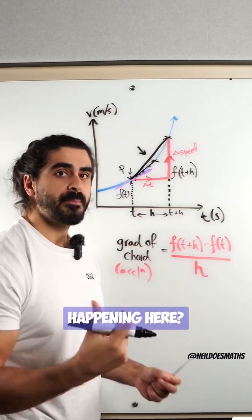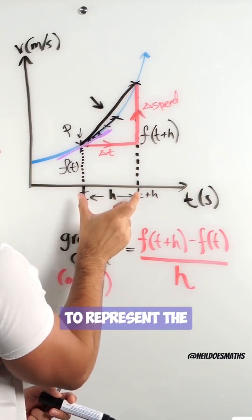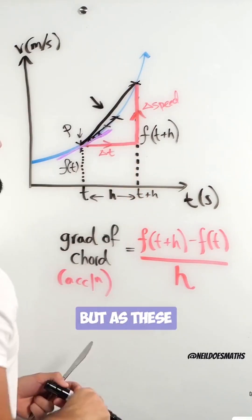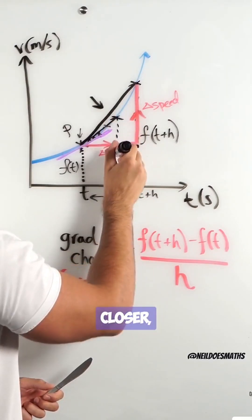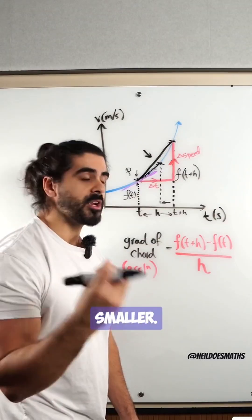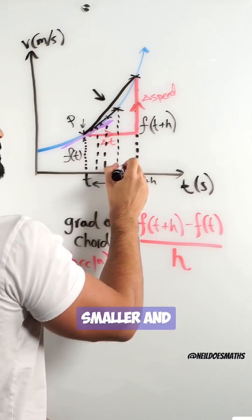Now what's happening here? Remember, we classified this value h to represent the distance between the two points of our chord. But as these points get closer, the h value also gets smaller and smaller.